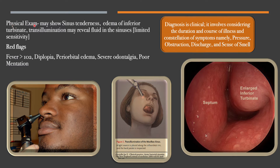Physical exam may show sinus tenderness and edema of the inferior turbinate. Transillumination may reveal fluid in the sinuses, but this has limited sensitivity. Red flags include fever greater than 102, diplopia, periorbital edema, severe odontolgia, severe toothache, poor mentation, and altered mental status. Diagnosis is clinical.